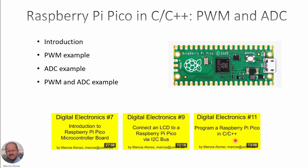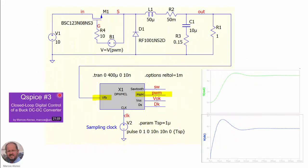Digital Electronics No. 11 is especially interesting because today we are going to continue with the programming of the Raspberry Pi Pico in C, C++. In a previous video, QSpice No. 3, we presented how to digitally control a buck converter in closed loop. We did this simulation in QSpice with a module that includes a program in C, C++ to do the control of the converter in closed loop. Today we are going to see how to use the Raspberry Pi Pico to implement the two basic functions needed to control a converter.